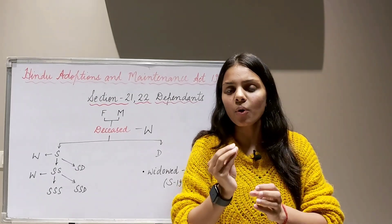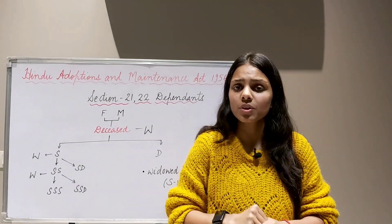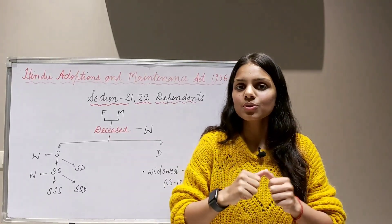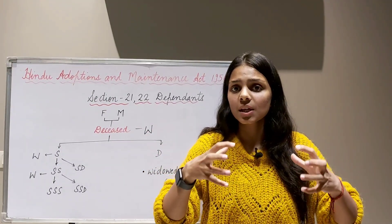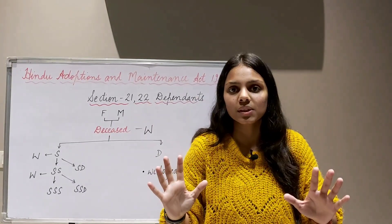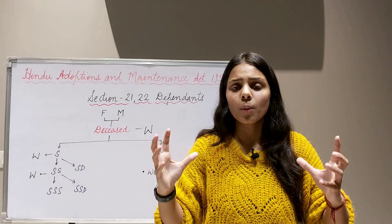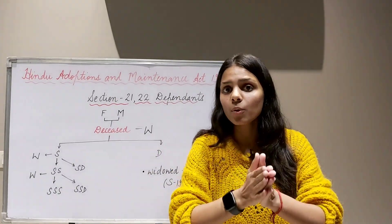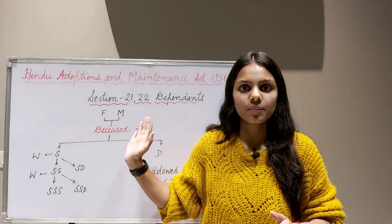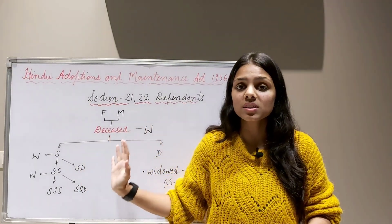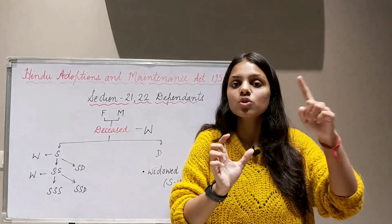Section 22 is very important. Under Section 22, the legal heirs who have inherited the property must maintain the dependents in proportion to the share of the estate they have inherited. So if legal heirs have shares of 10%, 20%, 20%, and 30% in the property, each must provide maintenance in that same proportion. This is a key rule for maintenance of dependents.